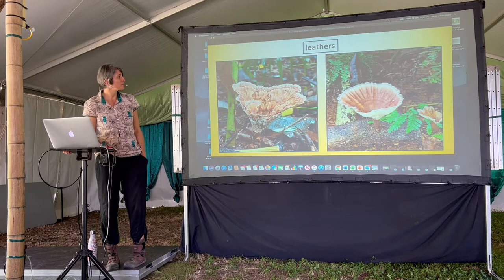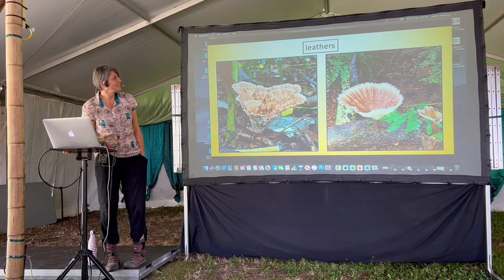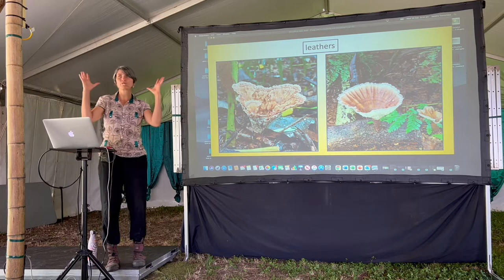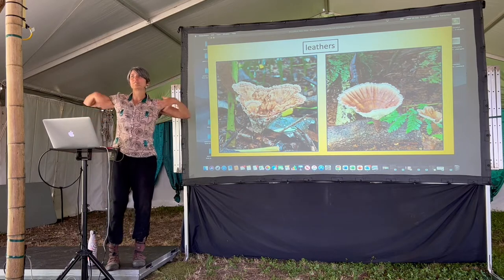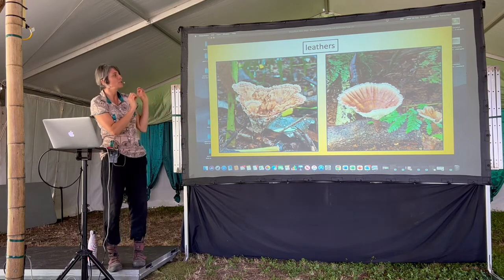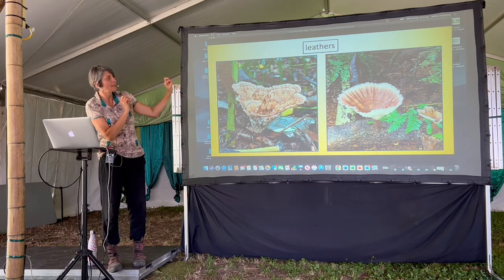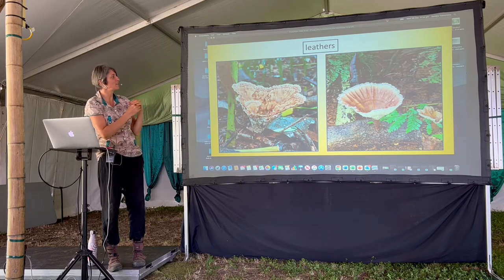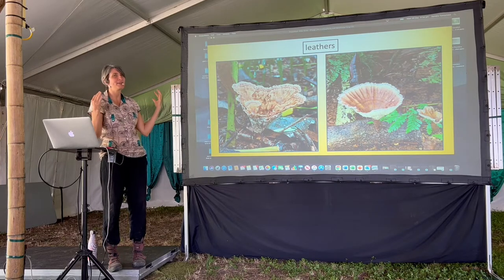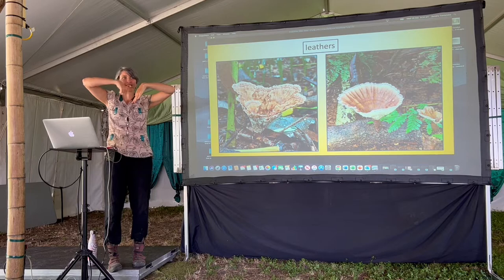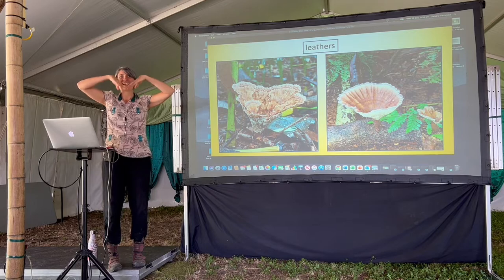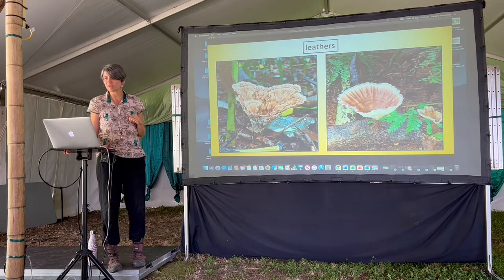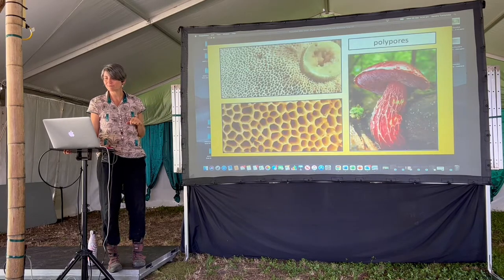The leathery goblet — Schizophyllum elegans — is very common and can grow very large. When young, they're beautifully coloured with purples and pinks shining through, and they get really big. Water then accumulates in the middle, and often animals will come and drink from them. They're literally nature's cup.